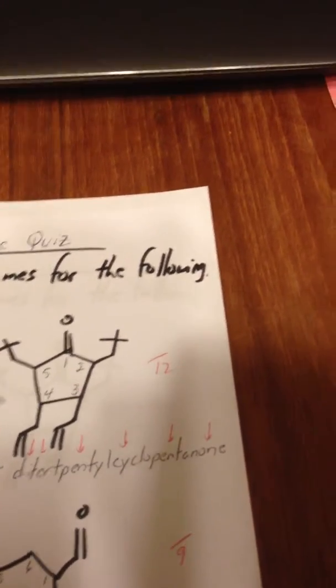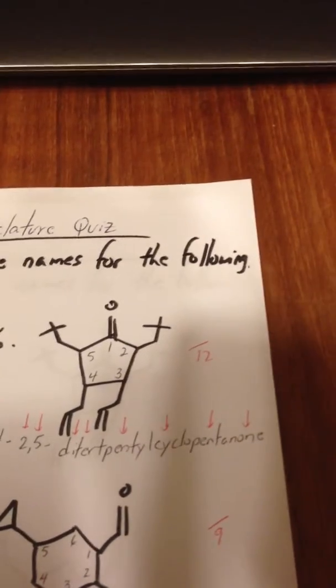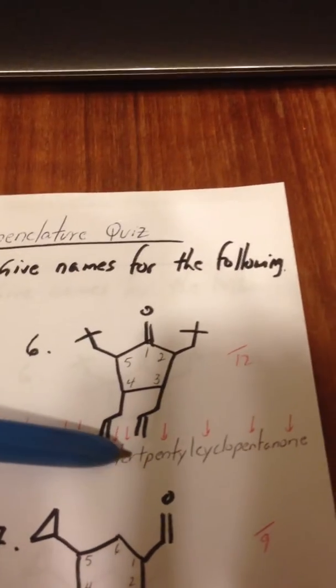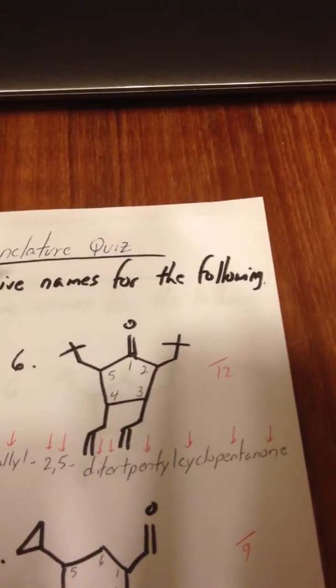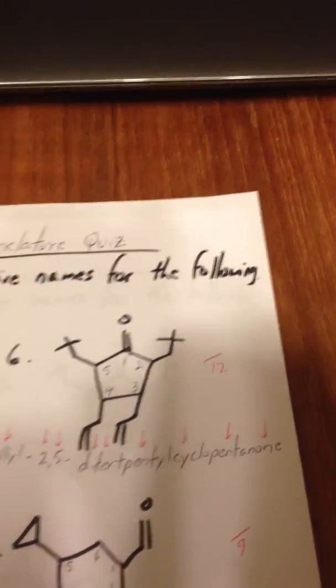Again, we can go counterclockwise if we wanted to, because it's symmetrical, and we get 3,4-diallyl-2,5-di-tert-pentyl-cyclopentanone. The one is to show that it's a ketone.